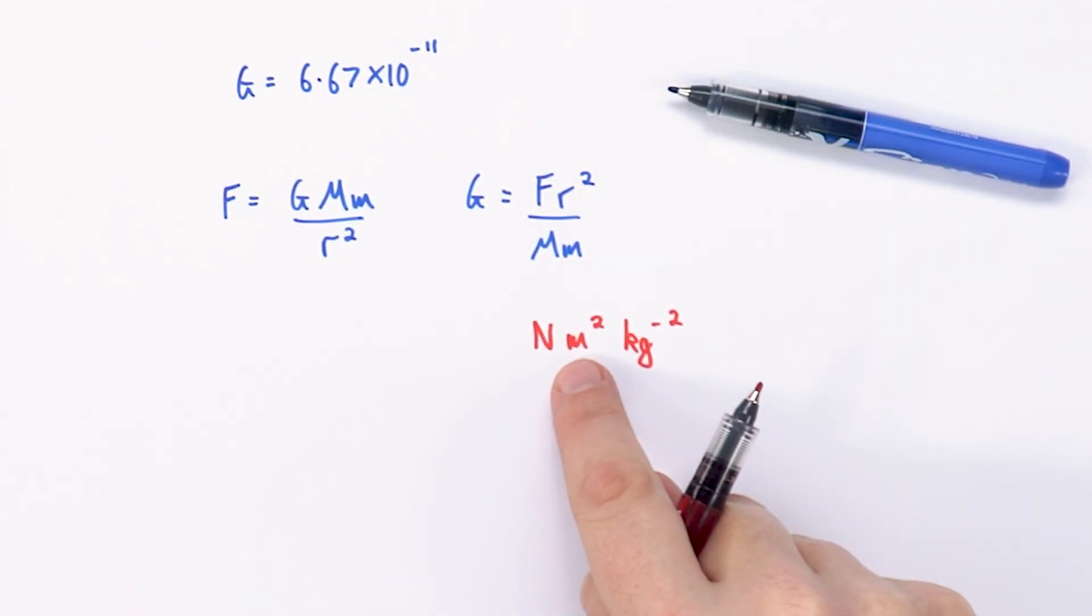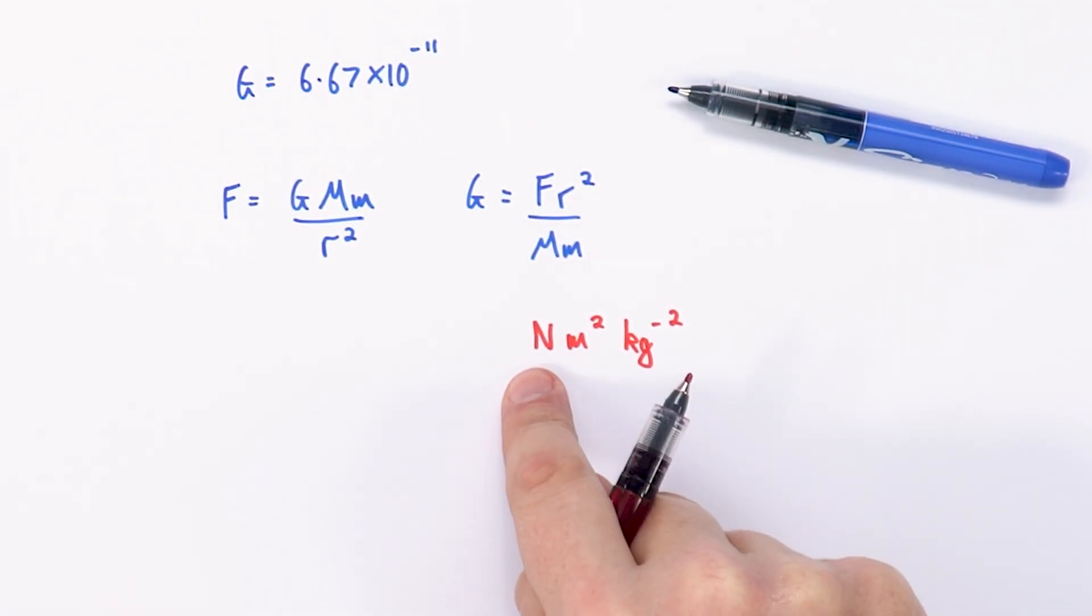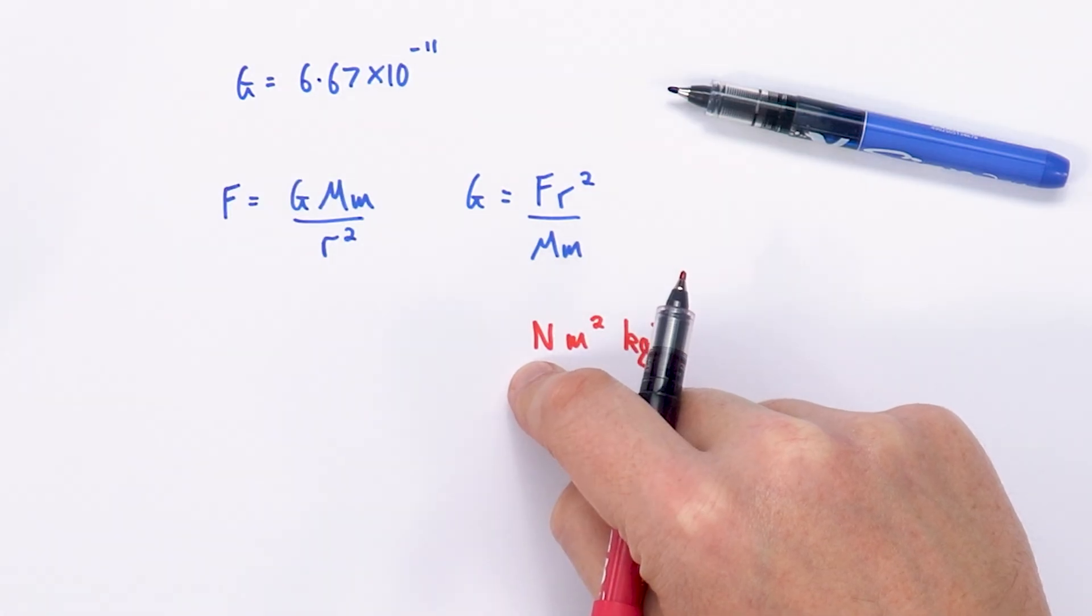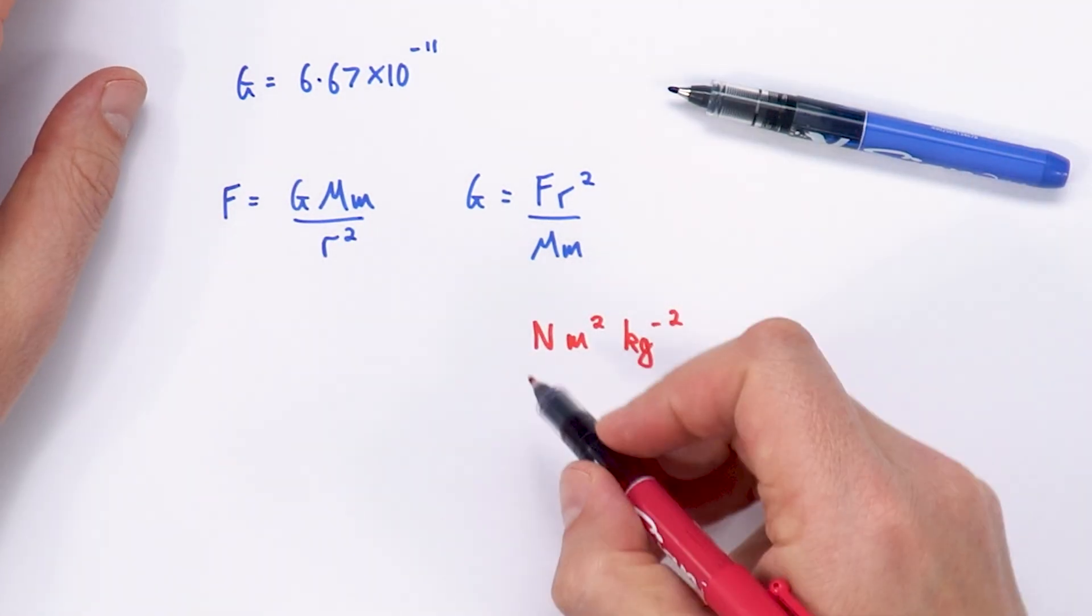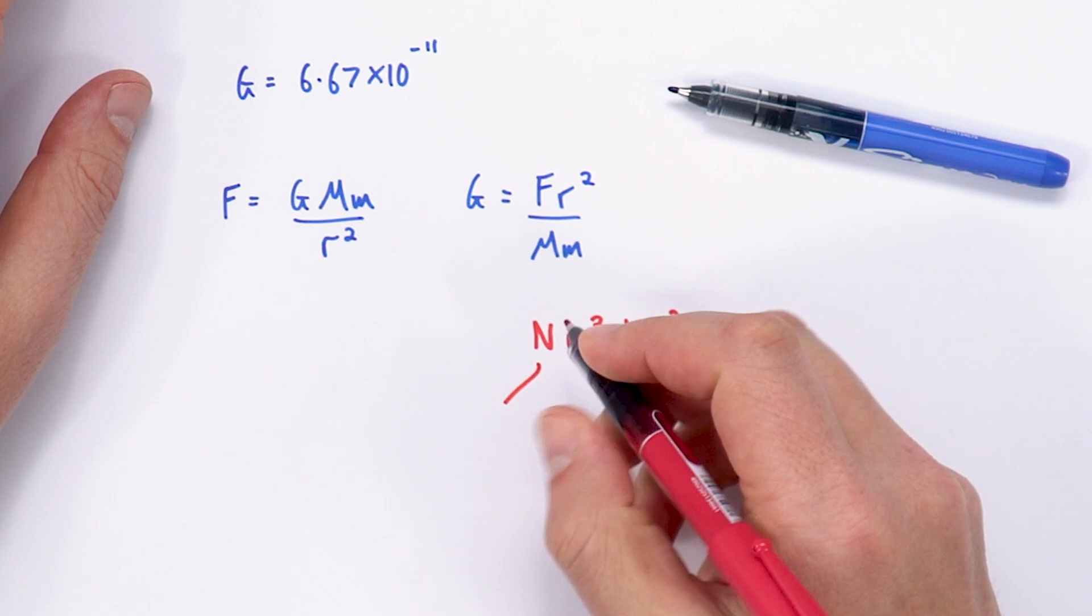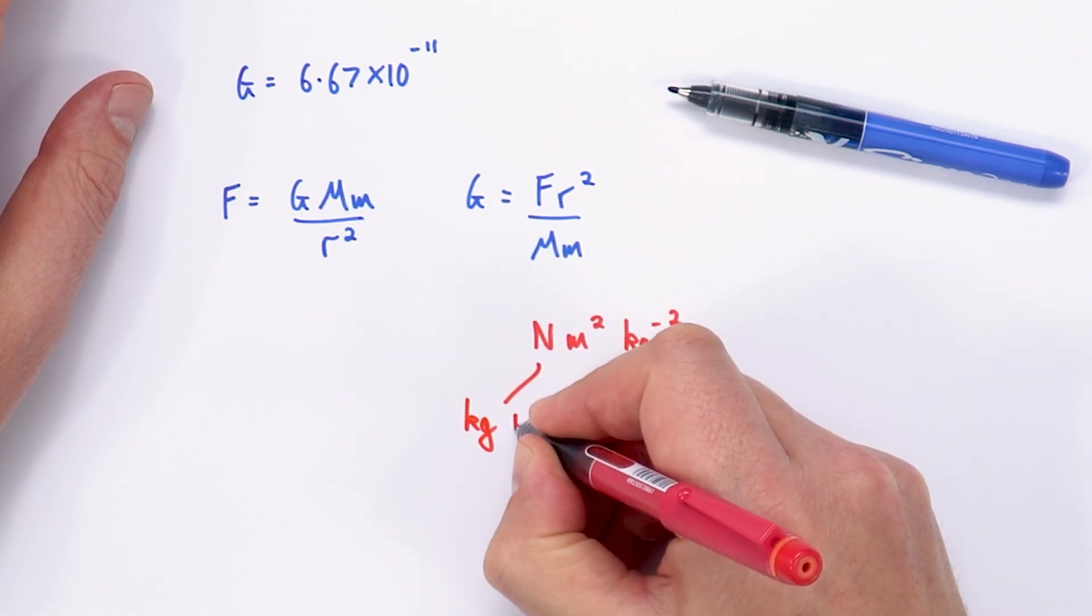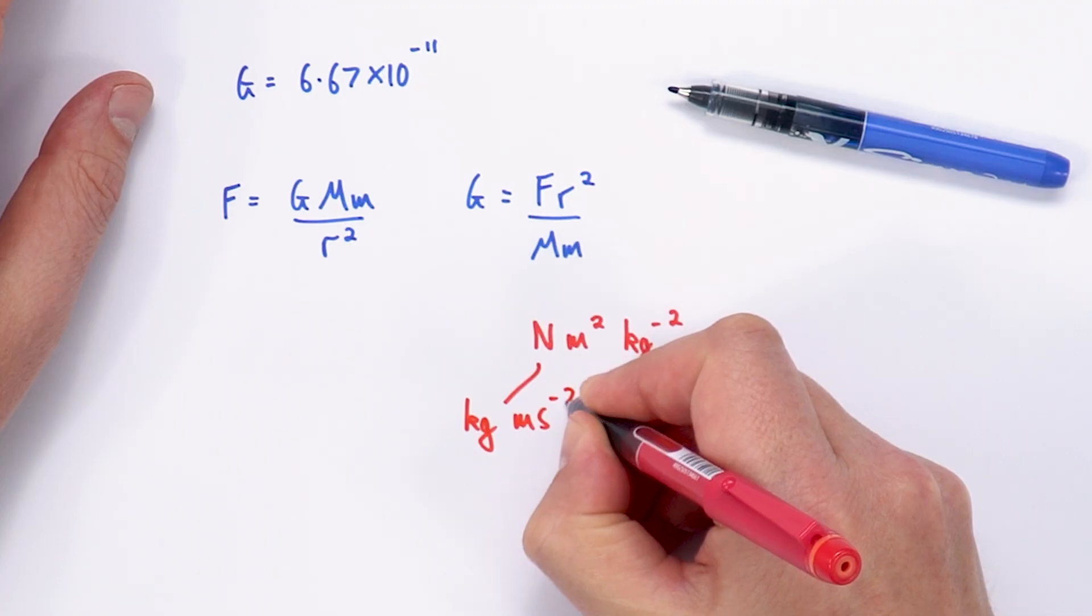Okay so we can see that these are in base units but what about the Newton? Well a Newton is a measure of force. Force I guess we can express as mass times acceleration. So another way of writing Newtons is it would be its mass kilograms times acceleration metres per second to the minus 2.